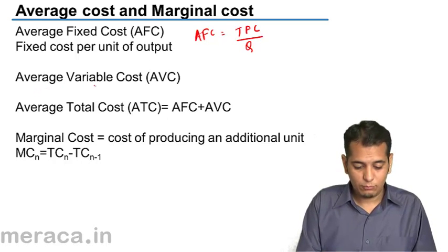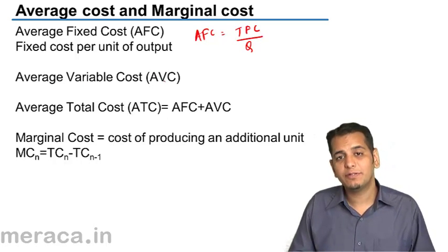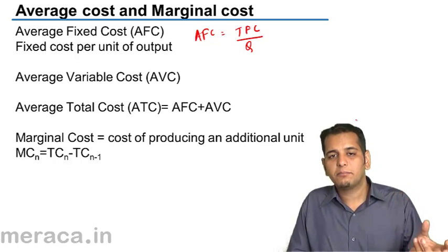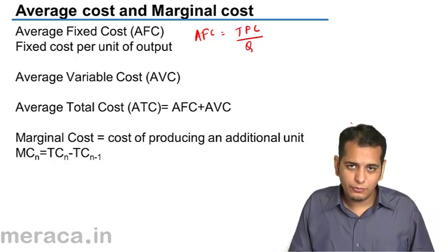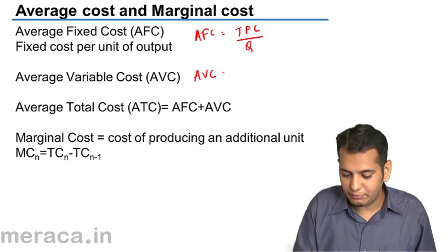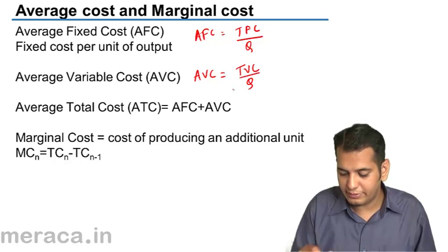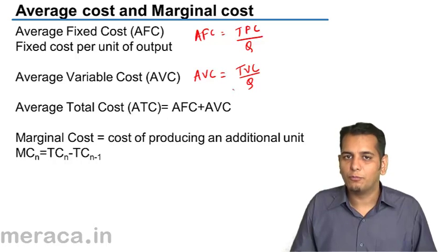What is average variable cost? Average variable cost is nothing but the variable cost per unit. The formula for average variable cost is total variable cost divided by quantity of output.